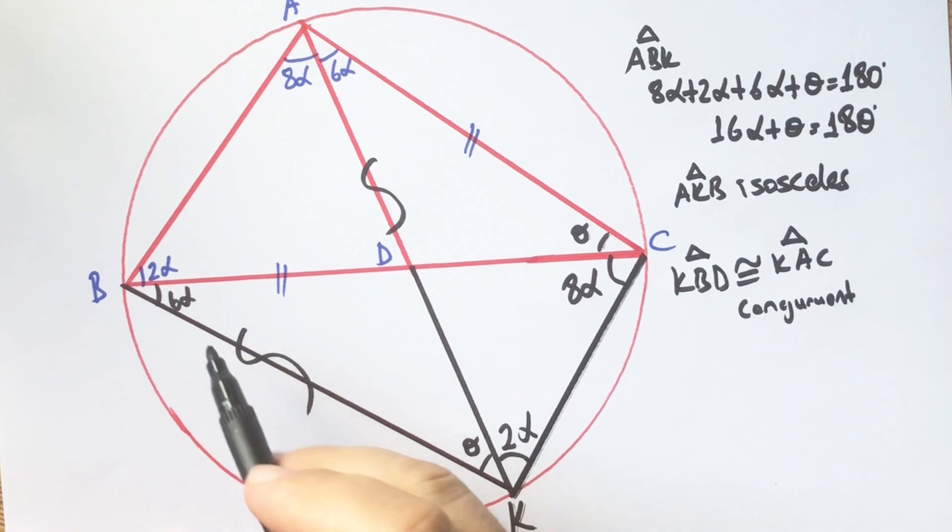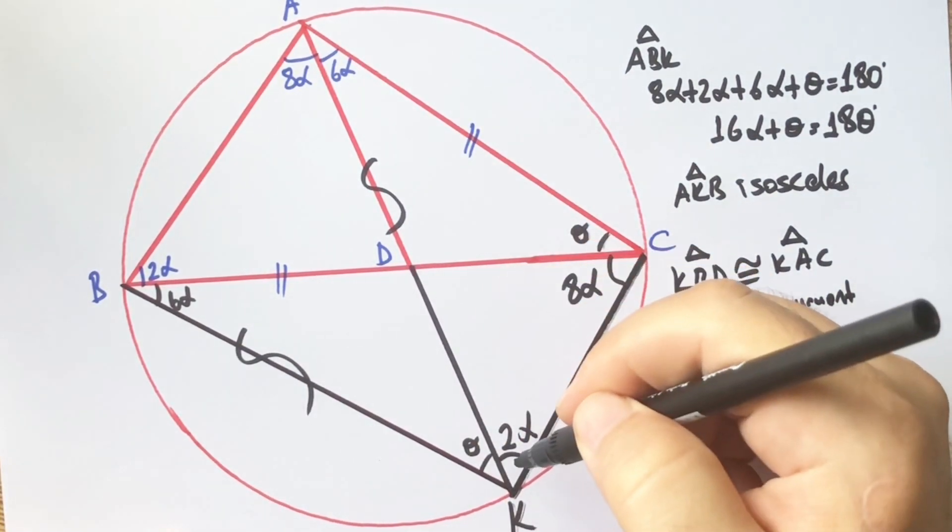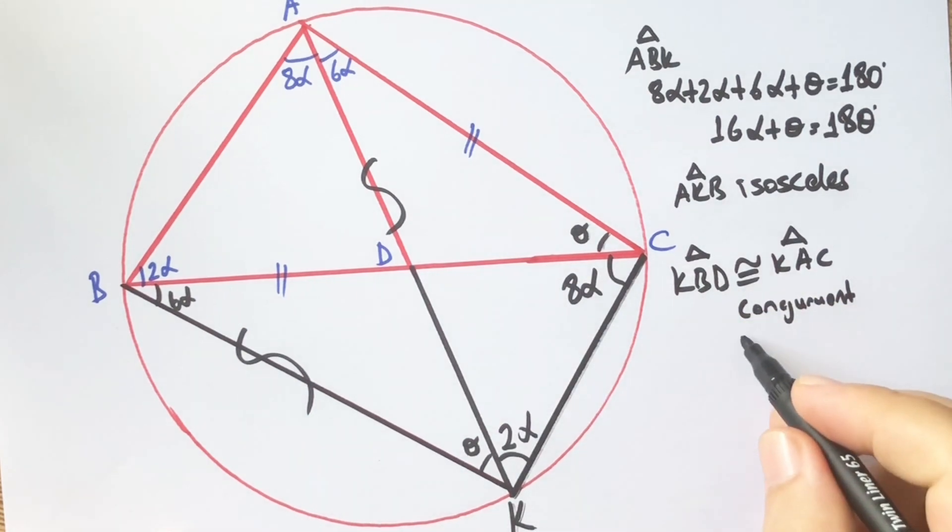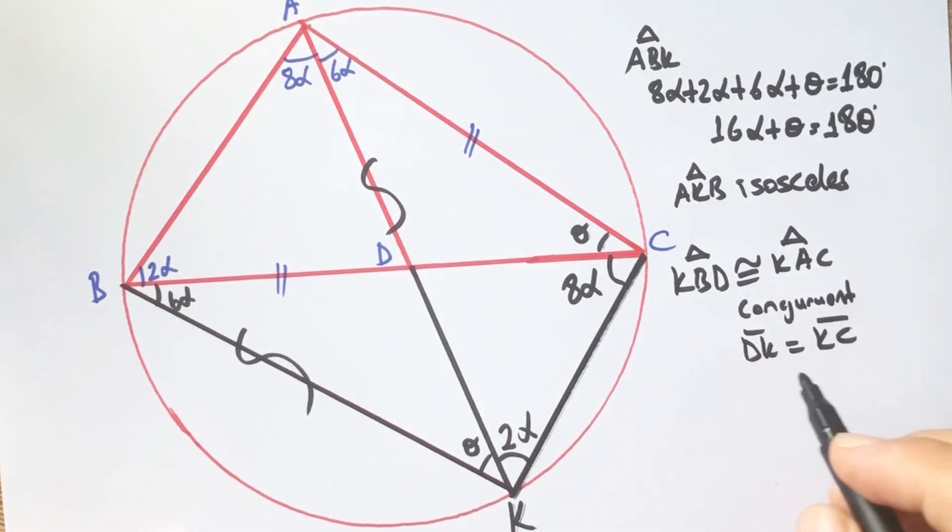Therefore, we know that KBD triangles have the same length opposite the same angles. Therefore, DK must equal KC.